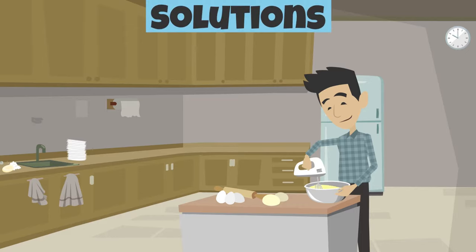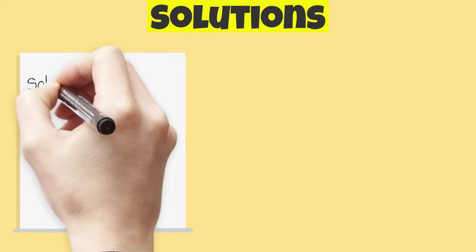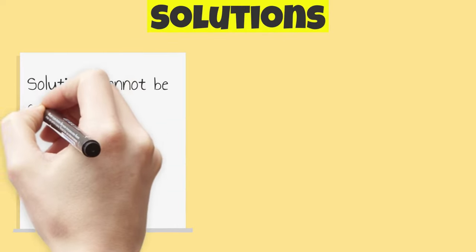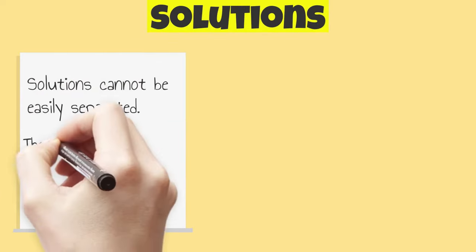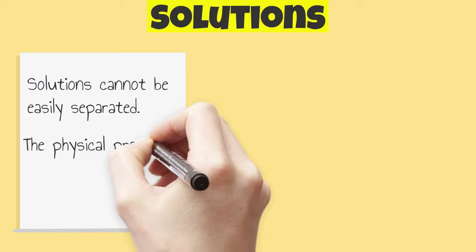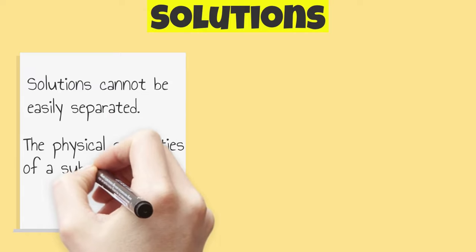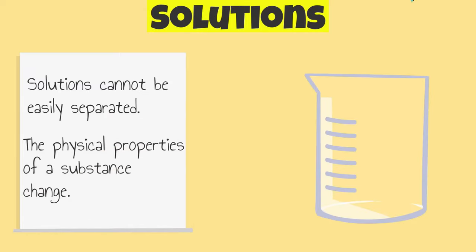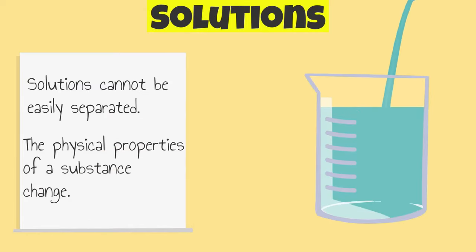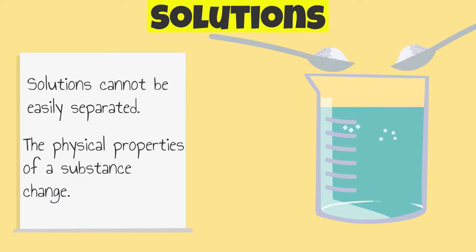Solutions are a special type of mixture that are formed when one substance dissolves in another. Solutions cannot be easily separated. In a solution, the physical properties of a substance change. For example, salt and sugar both dissolve when placed in water.